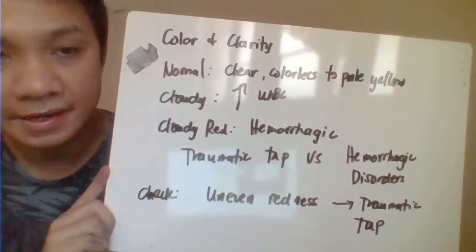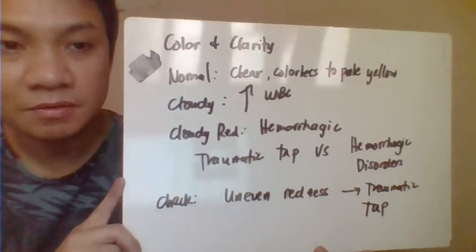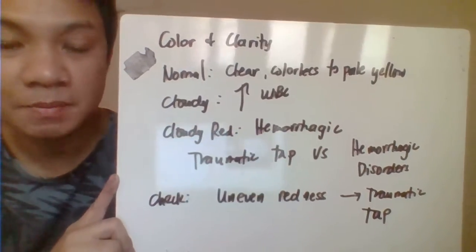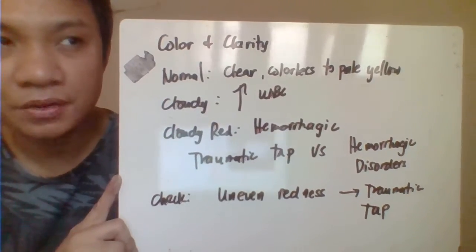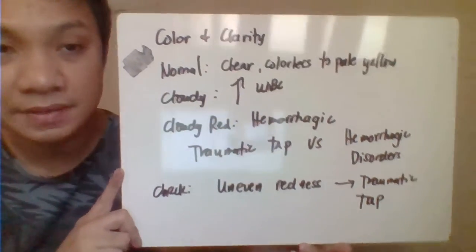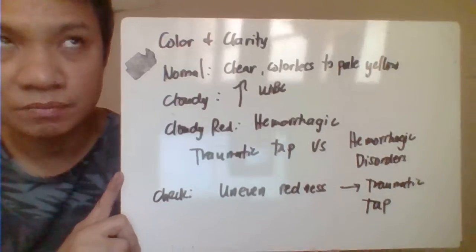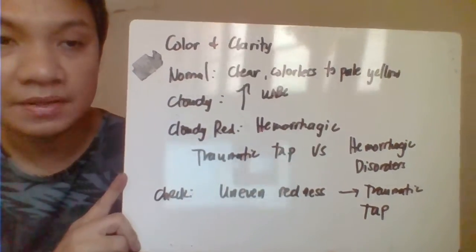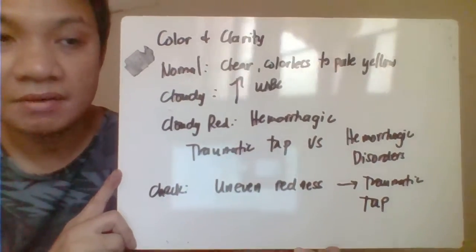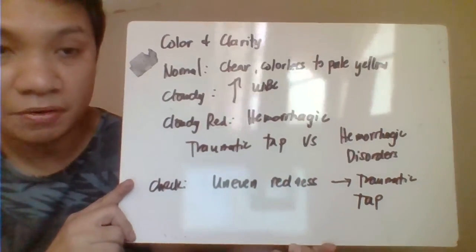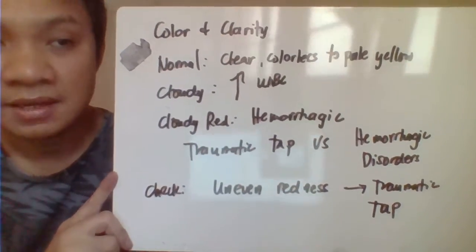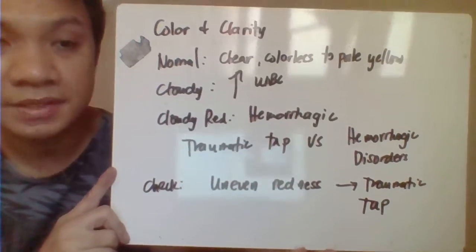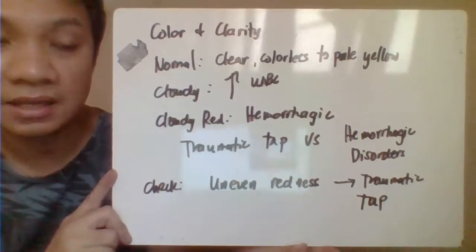For color and clarity: normal color should be pale, clear to pale yellow, and clarity should be clear. A cloudy yellow specimen is related to high WBC count in immunologic disorders. Milky appearance is related to crystal-induced arthritis. Cloudy yellowish to greenish color is related to microbial infection in septic arthritis. Cloudy red is seen in hemorrhagic disorders. To differentiate traumatic tap from hemorrhagic disorders, check for uneven redness across the collection tubes — uneven redness signifies a traumatic tap, similar to CSF evaluation.